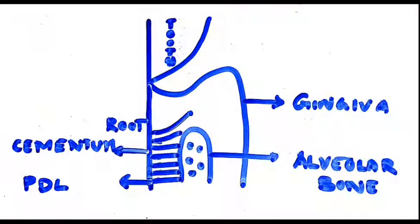The word periodontium is derived from the Greek words 'peri', which means around, and 'odons', which means tooth. So anything which comprises or surrounds the tooth becomes your periodontium.